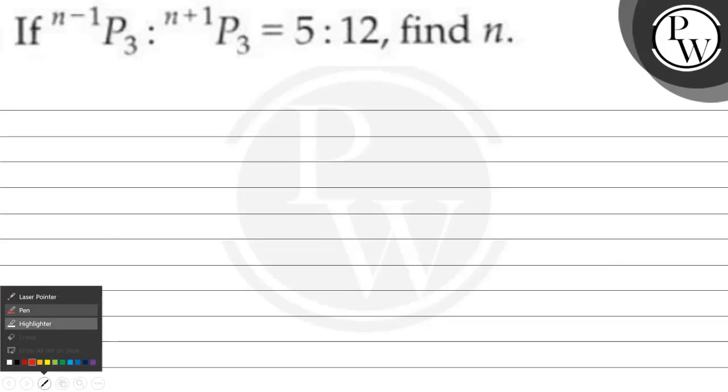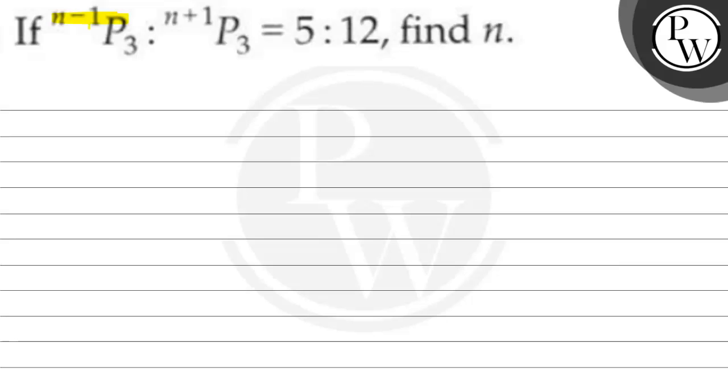Hello, let us read the question. The question says, if n minus 1 P3 is to n plus 1 P3 is equal to 5 is to 12, find n.